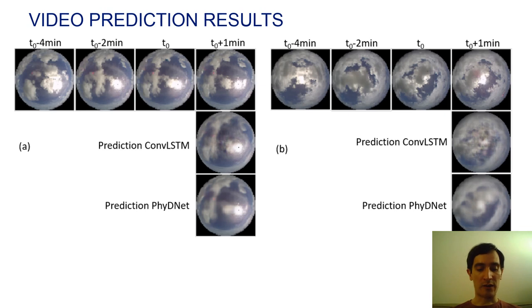And here, we can also see that the PhyDNet-DRAWL model predicts much sharper images than the baseline ConvLSTM.